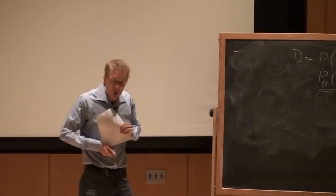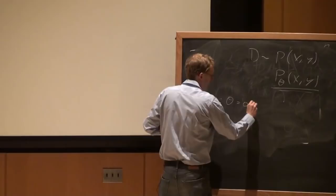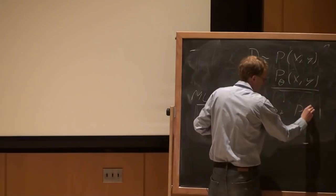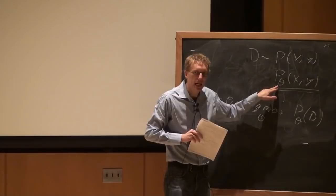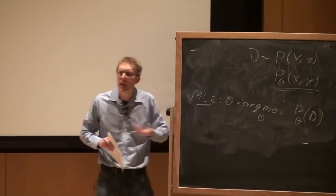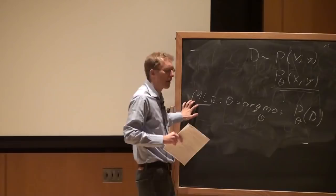We talked about two different methods to do this. The first is maximum likelihood estimation. In MLE, we find theta such that it maximizes the probability of the data we observed. You find parameters theta so that if you plug them into your model, the distribution is very likely to give you the data you observed. That's the idea behind maximum likelihood estimation — you want to maximize the likelihood that you observe the data that you did observe.